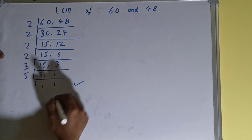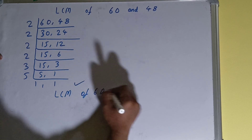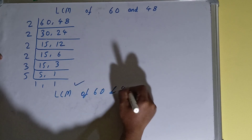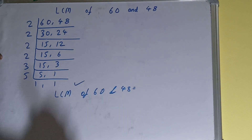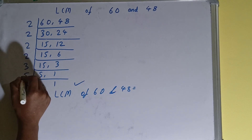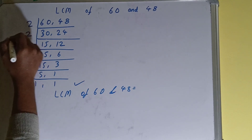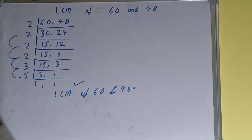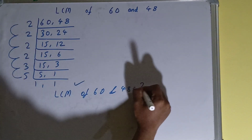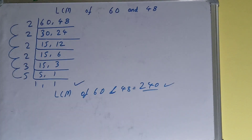Now we need to do one last thing: the LCM of 60 and 48 equals the product of all the numbers on the left-hand side. That is 2 × 2 × 2 × 2 × 3 × 5 = 240. So the LCM of 60 and 48 is 240.